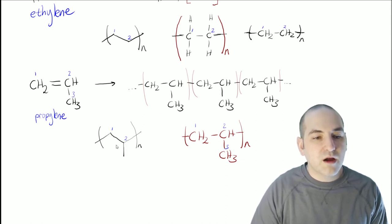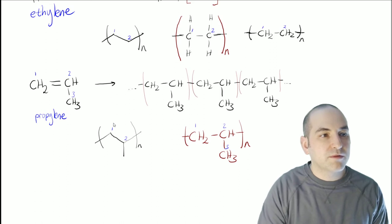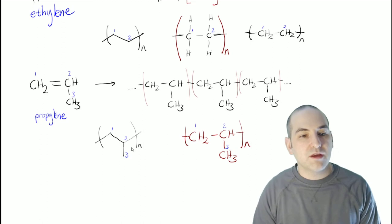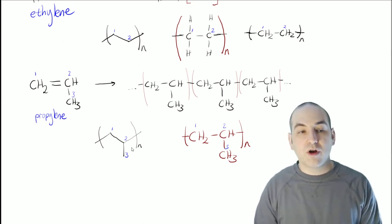And then there's also number three, carbon number three, coming off of carbon number two, which in this case, we still use a line structure for. So that would be our line structure for polypropylene.